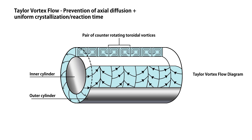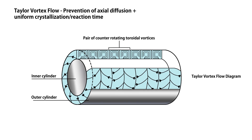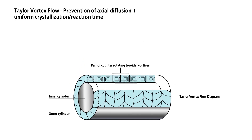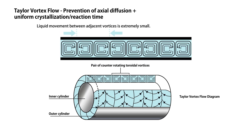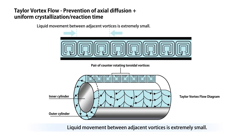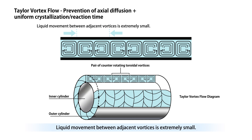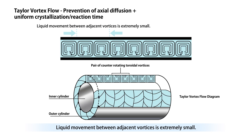Adjacent vortices flow in the same direction, as shown by the arrows, and the flow is difficult to disrupt, so there is almost no liquid movement between the vortices. This is called high extrudability.